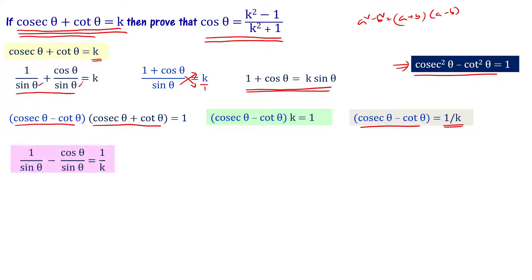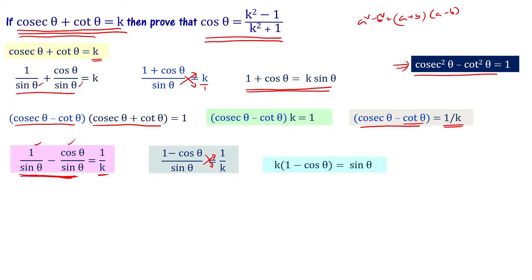Since cosec theta minus cot theta equals cosec theta minus cot theta: we write cosec theta as 1 by sin theta and cot theta as cos theta by sin theta, giving 1 minus cos theta divided by sin theta equals 1 by k. By cross multiplication: k times 1 minus cos theta equals sin theta.